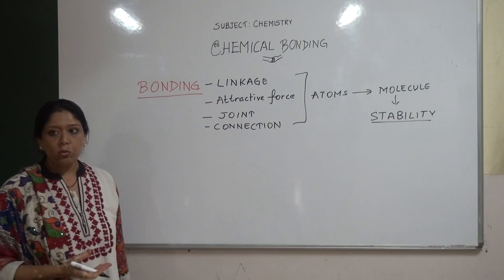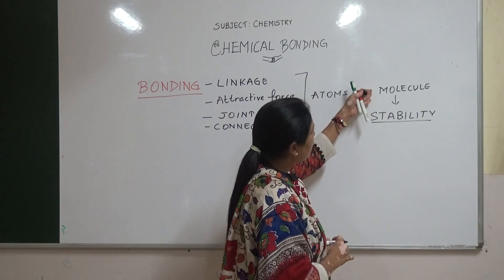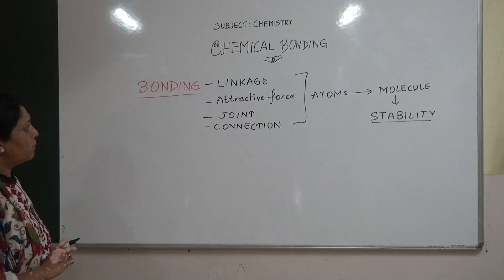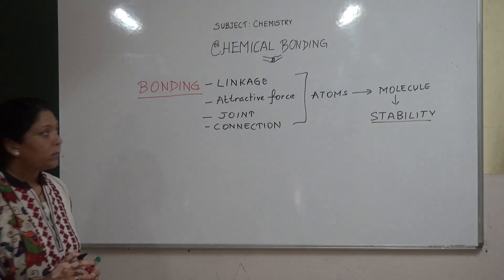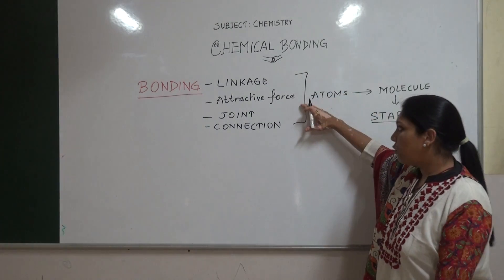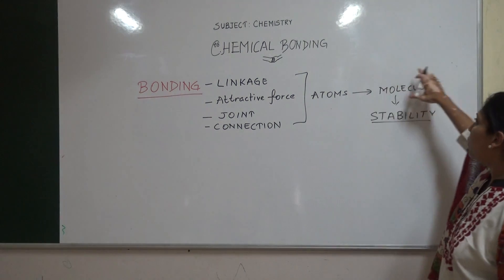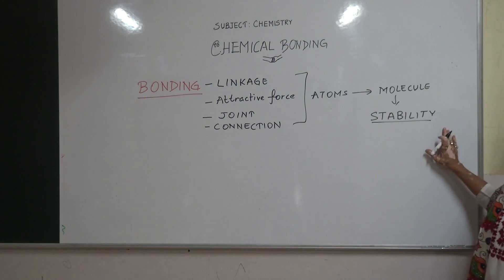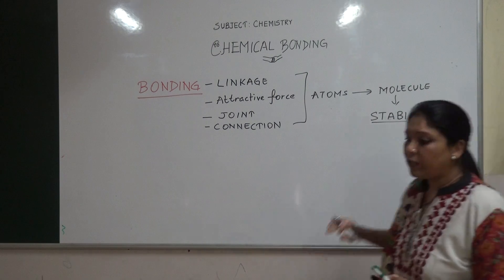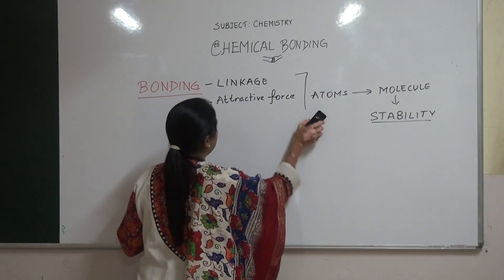That is nature's rule — everything in the world wants to attain stability. So atoms combine and form molecules in order to attain stability. Bonding is a linkage, an attractive force, a joint, a connection between atoms so that they form molecules to attain stability and exist as a stable molecule. Now, what are the various types of bondings or linkages that exist?